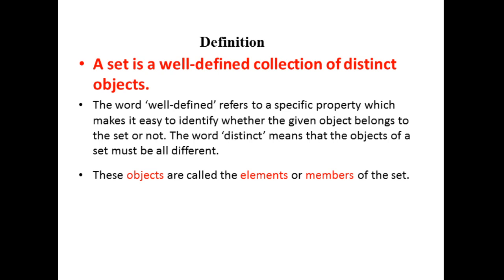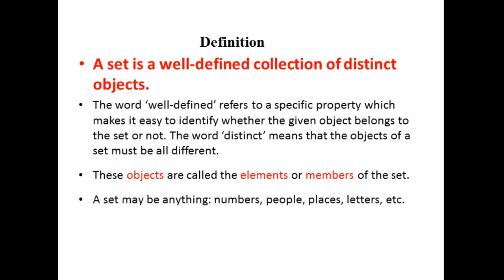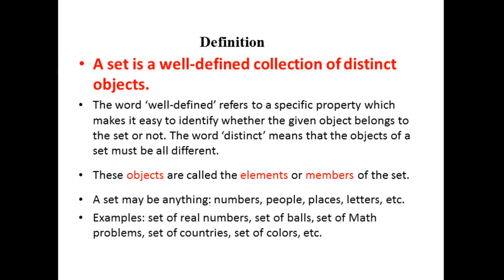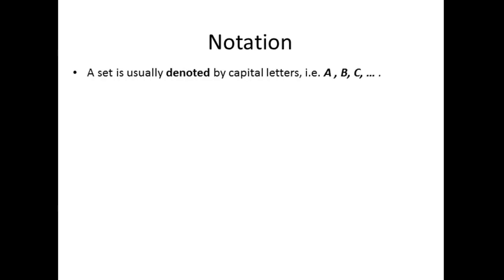These objects are called the elements or members of the set. A set has members or elements, and a set may be anything — it could be numbers, people, places, letters, etc. Examples of sets include: set of real numbers, set of balls, set of math problems, set of countries, set of colors, and more.